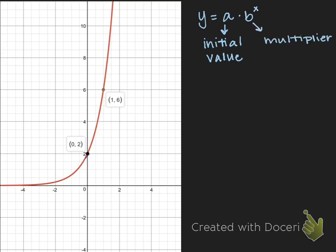Our initial value is also known as the y-intercept, so we can take a look at our graph and locate our y-intercept, which is at (0,2). So our initial value, or our a-value in this case, is 2.